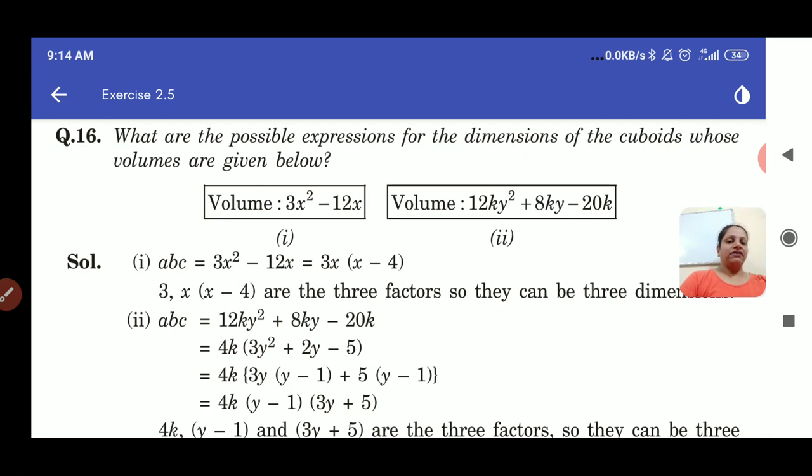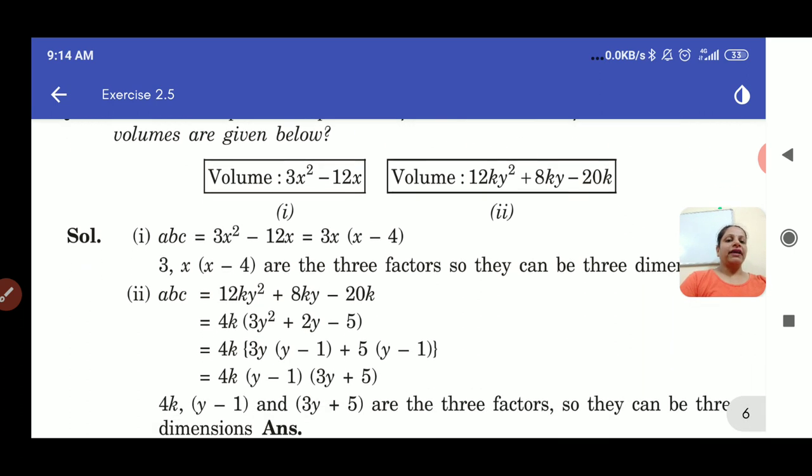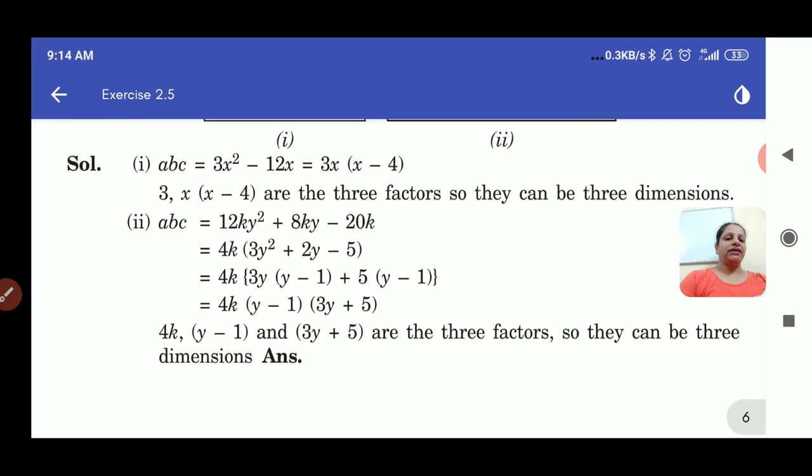Second part we have 12ky² plus 8ky minus 20k. So when we see this polynomial we can find out that 4k is common in all these three terms. So we take out 4k. When 4k comes out then we have the quadratic polynomial left inside and that quadratic polynomial is 3y² plus 2y minus 5.